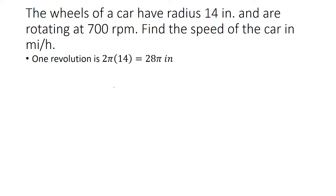So one revolution is going to be 2πr, where r is the radius. The radius of the car, or the wheel of the car, is 14 inches. So 2π times 14 is going to be 28π inches.